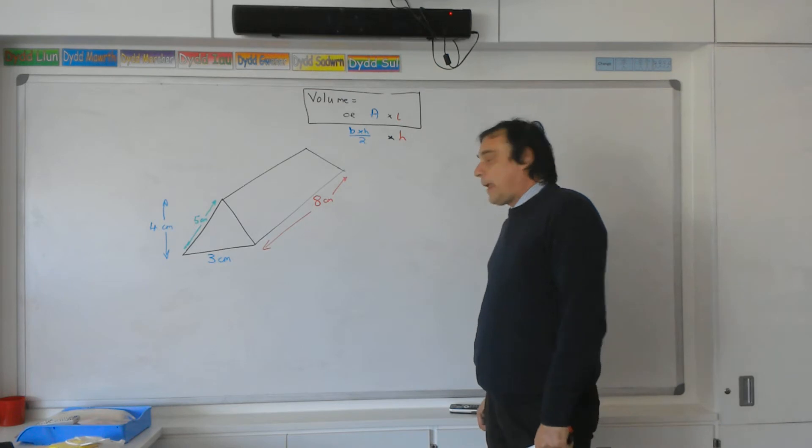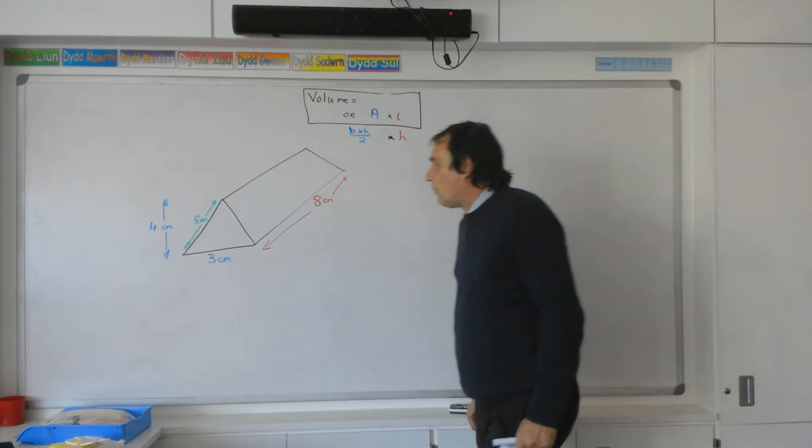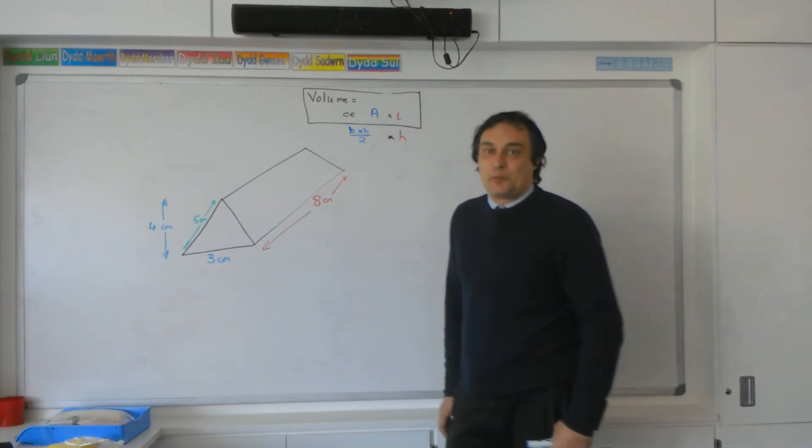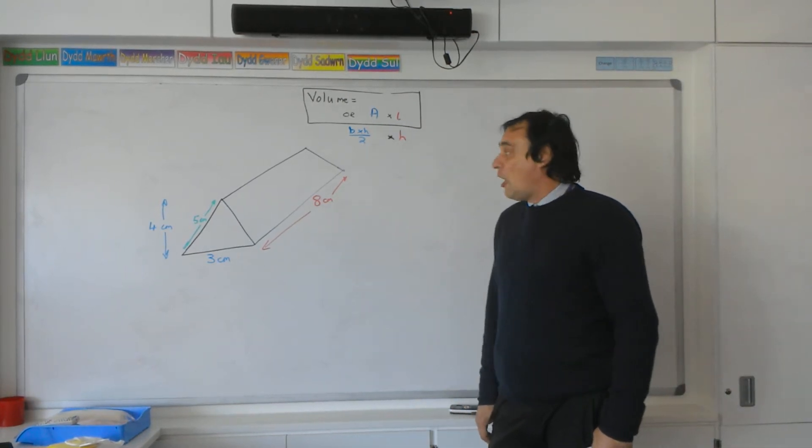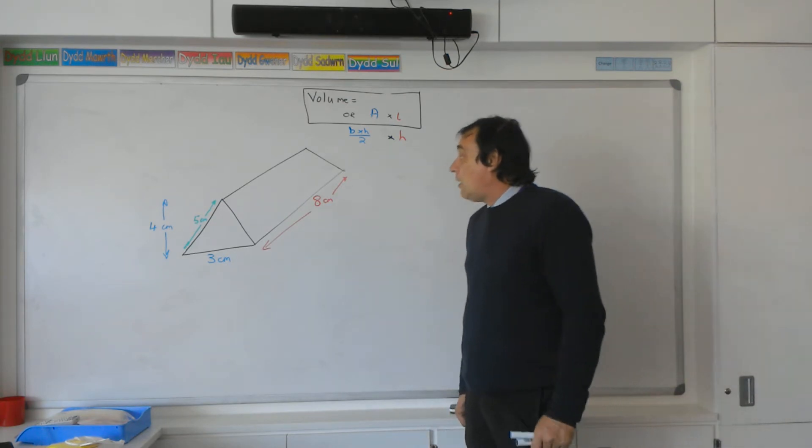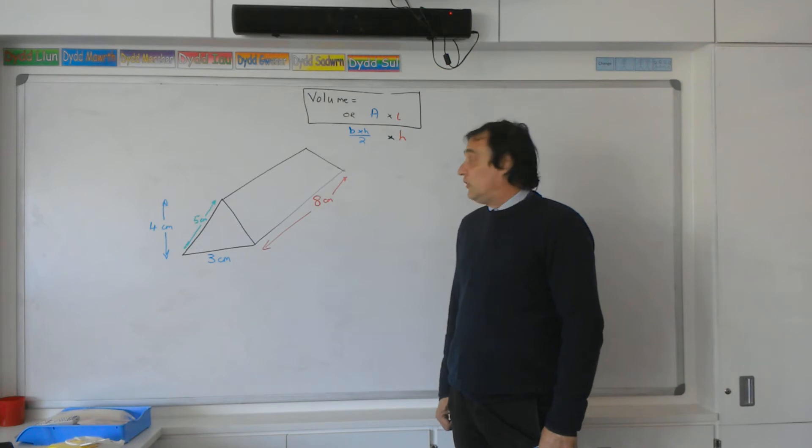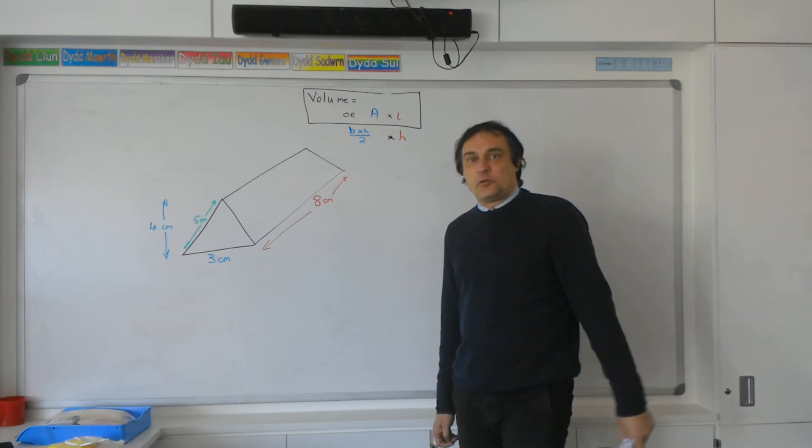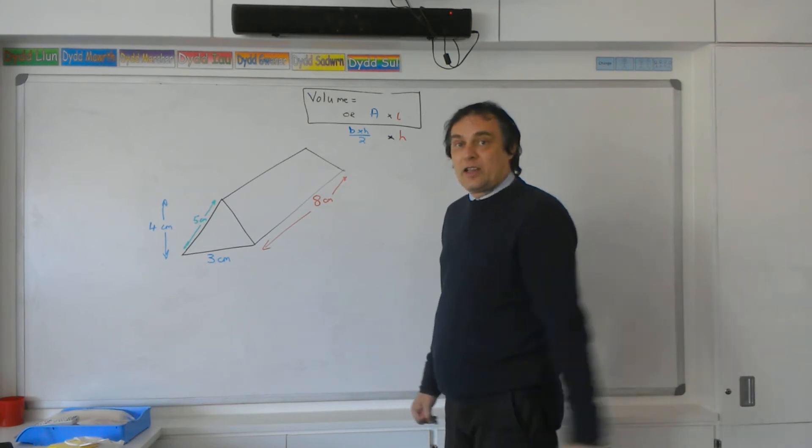Triangular prisms. The most famous triangular prism you'll come across in real life is probably the most delicious one—the Toblerone, a nice bit of chocolate there. So while you're doing these questions, if you just think of Toblerones, I'm sure the time will pass really quickly and you'll get them right as well.